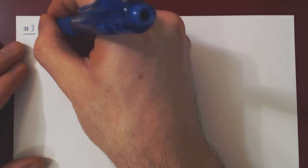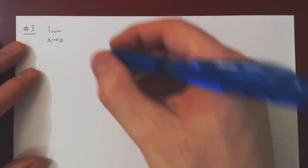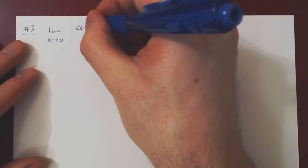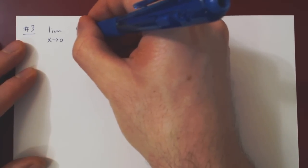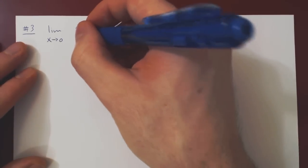Letting now x approach 0, cos of x minus 1 over sin of x squared.